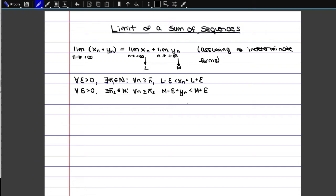So now, since we're trying to add together the two sequences, we're literally just going to line up the inequalities and add everything together. So, if you add the first parts, you would get L plus M minus epsilon minus epsilon, so minus 2 epsilon. Then we would have xn plus yn, and then L plus M plus epsilon plus epsilon, so plus 2 epsilon.